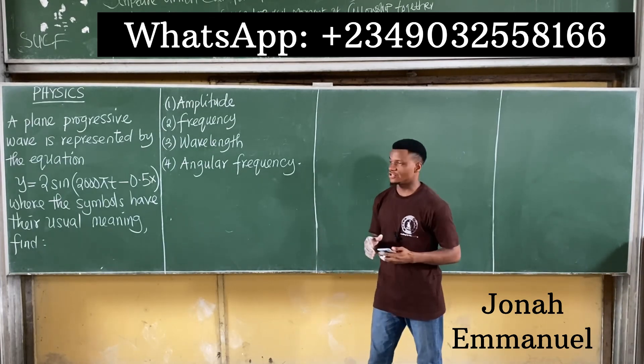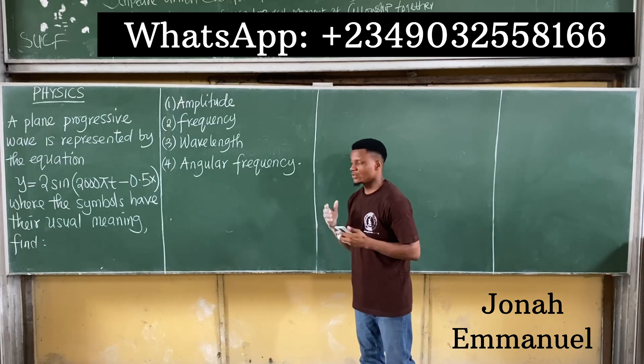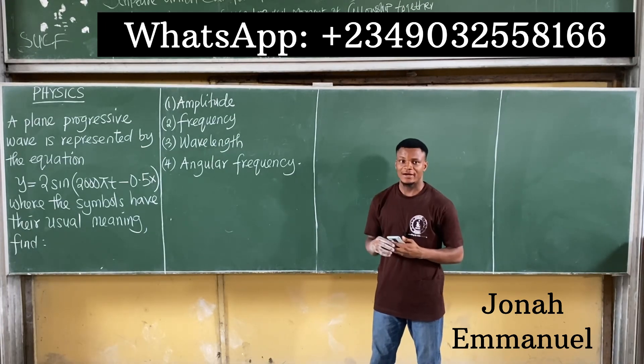Number 2, the frequency of the wave. Number 3, the wavelength, and number 4, the angular frequency.